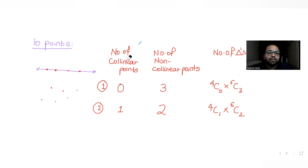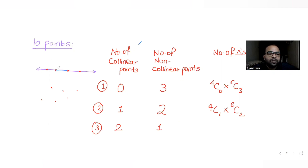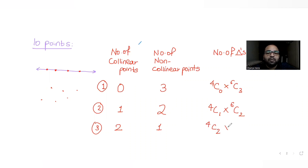Case 3: Select 2 collinear points and 1 non-collinear point. If we pick two collinear points and one non-collinear point, we can still form a valid triangle. The number of selections here is 4C2 × 6C1 — two from the four collinear points and one from the six non-collinear points.